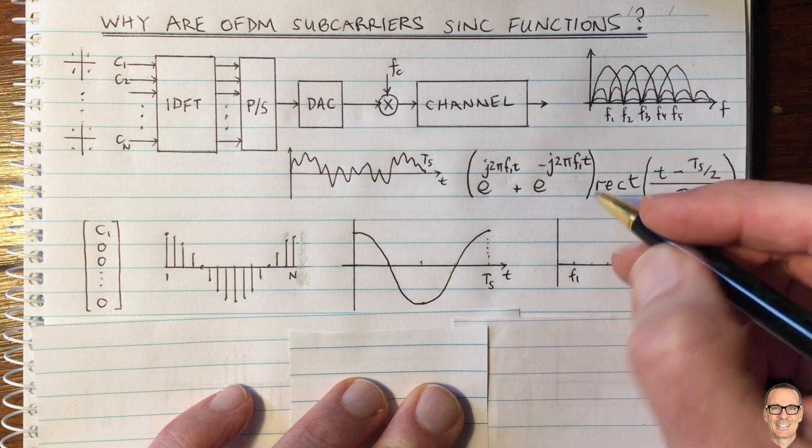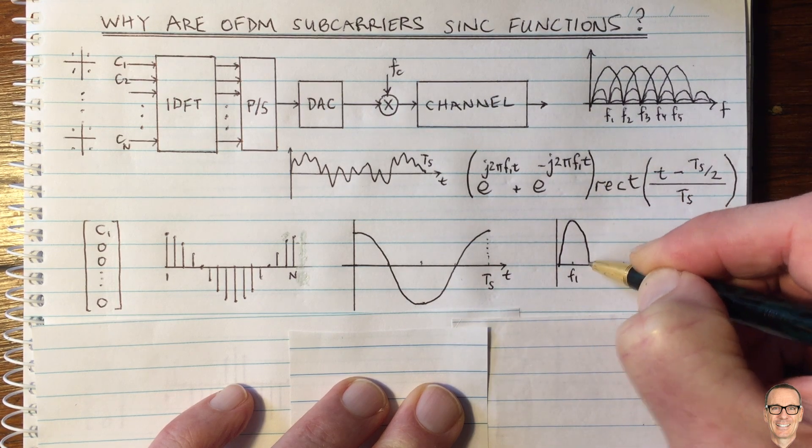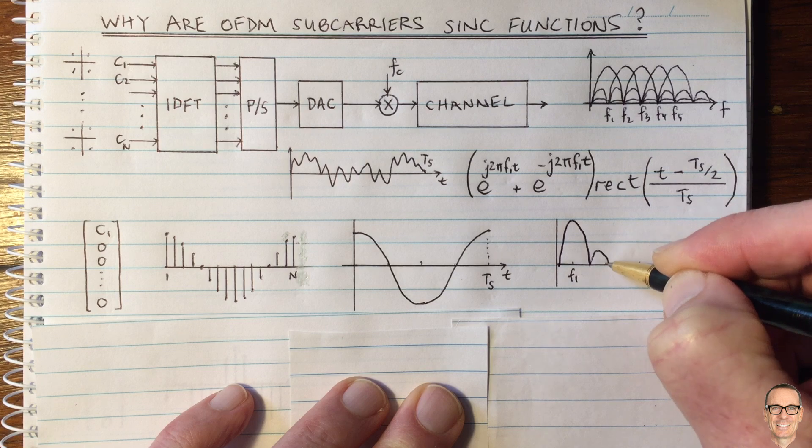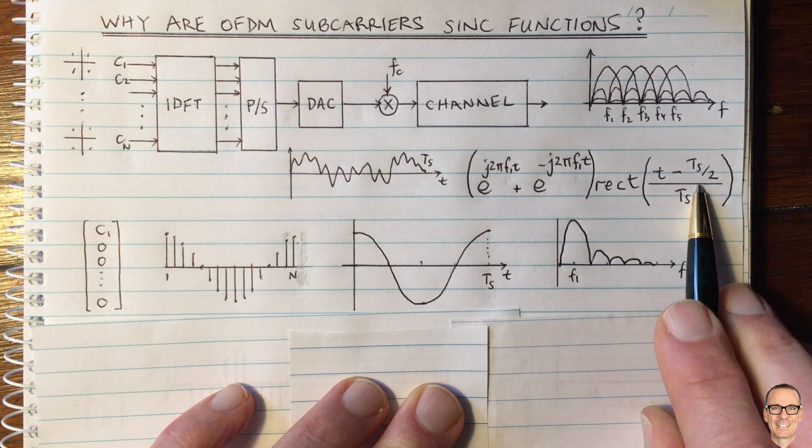This is why they are sinc functions. So I'm going to draw that in here, and the sinc function has this width. And of course, it's given by the Fourier transform of this rect, as I said.